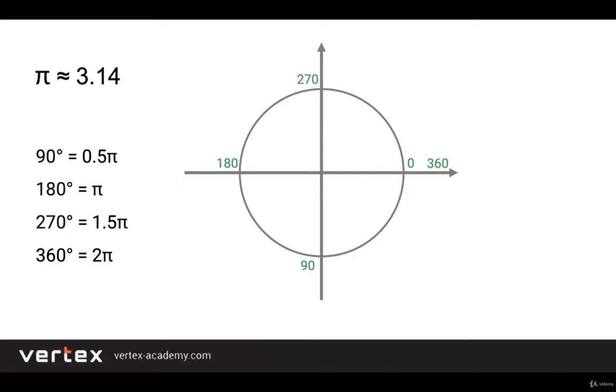Now let's place the values on the circle. 0 degrees and radians equals to 0. 90 degrees equals to 0.5 pi. 180 degrees equals to the value of the number pi. 270 degrees equals to 1.5 pi, and 360 degrees equals to 2 pi.